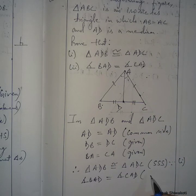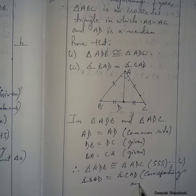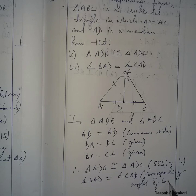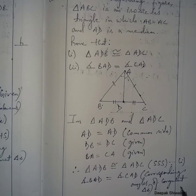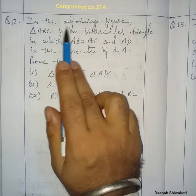The reason they are equal is that they are corresponding angles of congruent triangles. This completes Question 11. Next is Question 12.